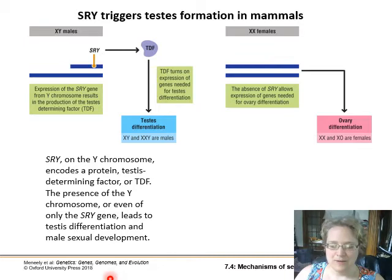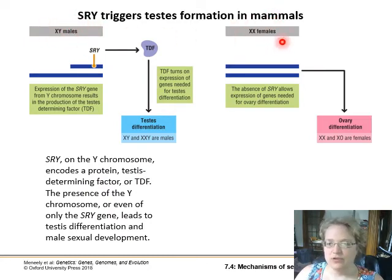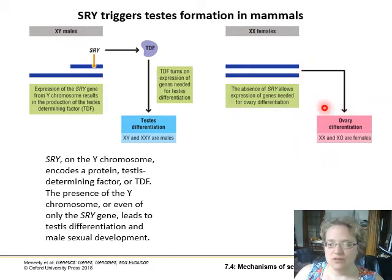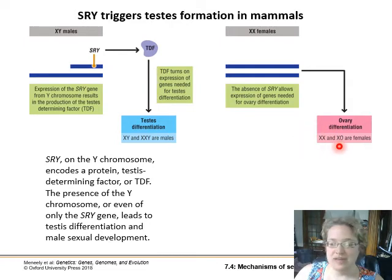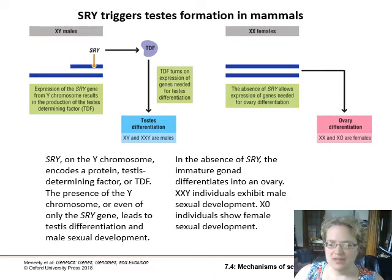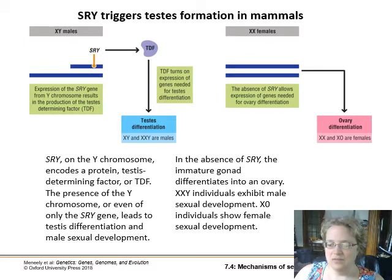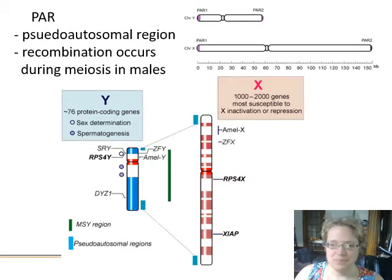Generally, SRY only shows up with the Y chromosome, so XY is male and XX is female because the X chromosomes are generally not carrying a copy of the SRY region. If SRY is not present, the default state is ovary differentiation. Even if you have two copies of the X chromosome, the presence of the Y chromosome and its sex-determining region starts off male development. If you only have one X chromosome and are missing the sex-determining region, you'll develop ovaries instead. So it's the presence or absence not of the X chromosome per se, but of this particular sex-determining region.